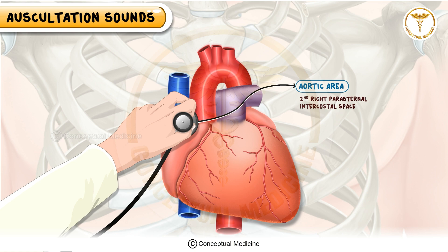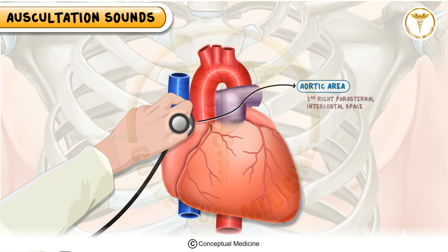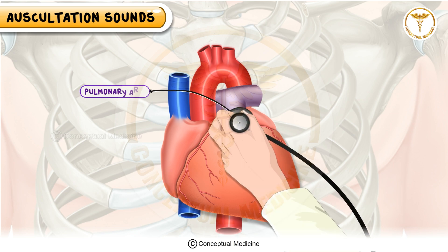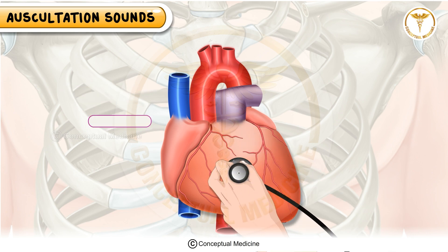Murmurs from aortic stenosis often radiate to the carotid arteries. The pulmonary area is located in the second left parasternal intercostal space. It is the best location for auscultating pulmonary valve murmurs.